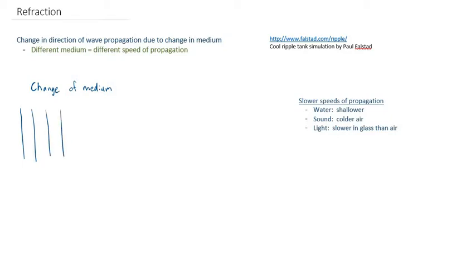And I'm going to start in the faster medium, and then I'm going to have some kind of a boundary. So here is my boundary. And then we're wondering what happens as this wave propagates across this boundary.